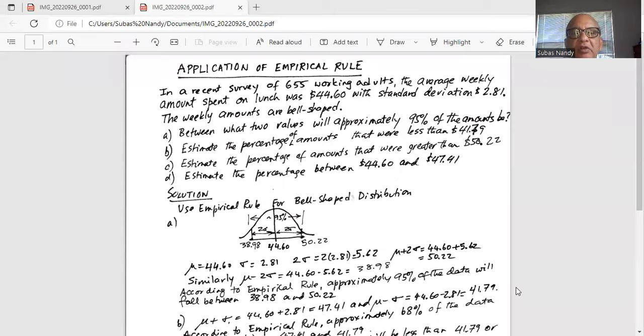Application of empirical rule. In a recent survey of 655 working adults, the average weekly amount spent on lunch was $44.60 with standard deviation of $2.81.